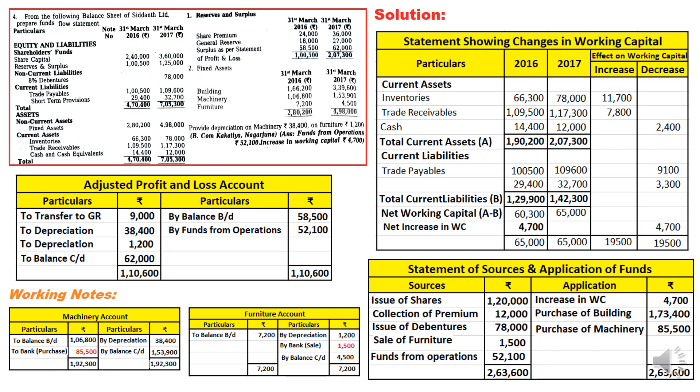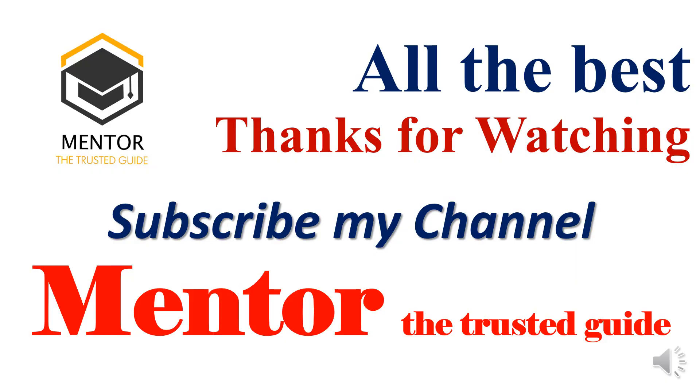This is the net block method of depreciation in a fund flow statement with adjustments — where we prepare one asset account per adjusted item and one depreciation figure is given. In the next video, the fifth one, I will show the problem with the gross block method. I hope I made you understand. Please follow and subscribe to my channel 'Mentor — The Trusted Guide' and motivate me to make more quality videos. I wish you all the best, thank you.